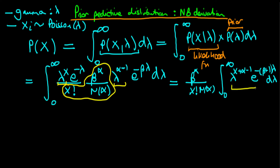We notice that within this integral, this is exactly the kernel — the lambda part — of a gamma distribution. It's a gamma distribution with first parameter alpha prime equal to x plus alpha, and second parameter beta prime equal to beta plus 1.